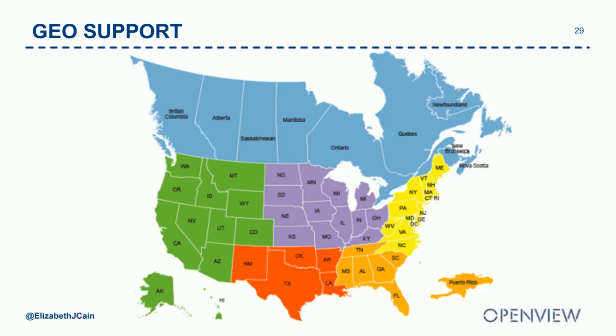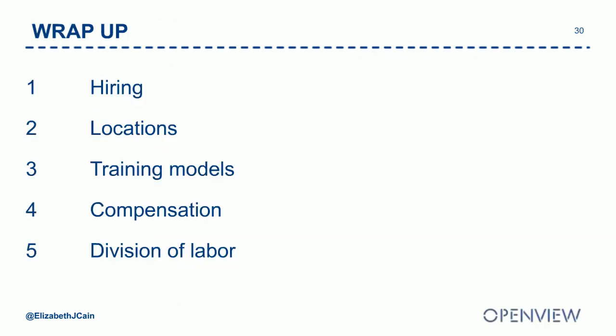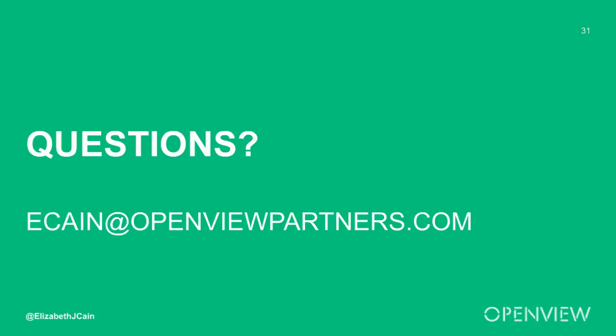To wrap up: we went through five key areas — hiring decisions, locations, training models, compensation, and specialization. From my perspective, there's no template here and no one way to do it. What I wanted to do was uncover ideas and help people think through the problems they might face as they scale a team, covering the pros and cons of these decisions. I've seen all of these models in play. Some work, some don't, and they evolve.